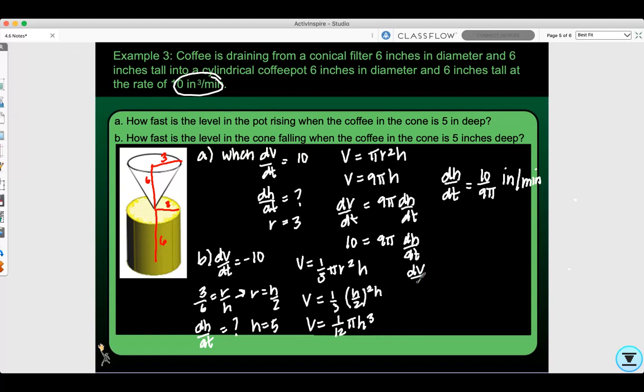Find dV/dt: that's 1/4 πh² dh/dt. dV/dt is negative 10 since the coffee is leaving the cone. So negative 10 equals 1/4 π(5)² dh/dt, because h is 5 inches deep. Solving for dh/dt gives negative 40 over 25π inches per minute.